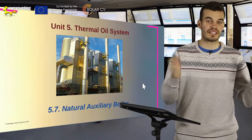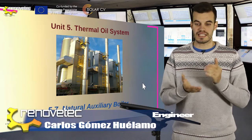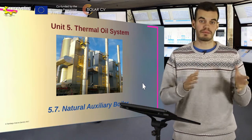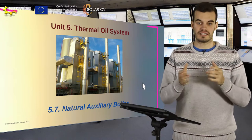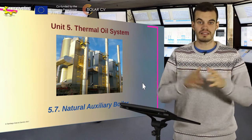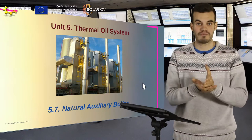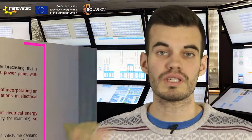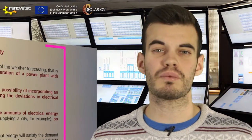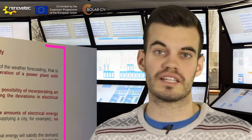Throughout these units, we have seen that the main problem in a PTCSP plant is that the electrical production and the electrical consumption of the people must match. That is, if we generate some energy in the plant, the people must consume this energy at the same moment. As we saw in unit 2.3 on thermal storage, it is impossible to store electrical energy because you cannot stop an electron.